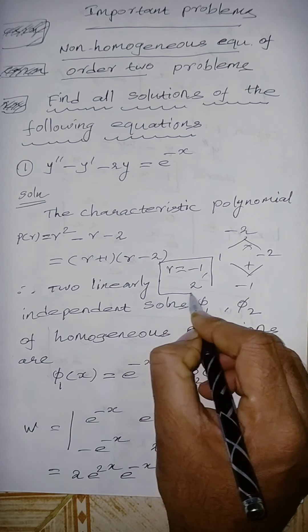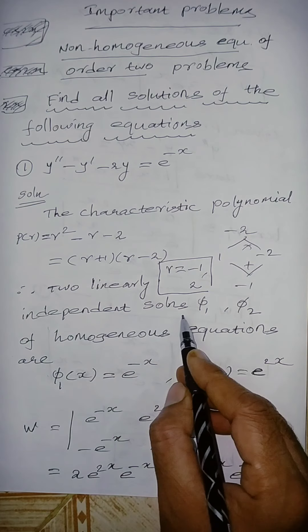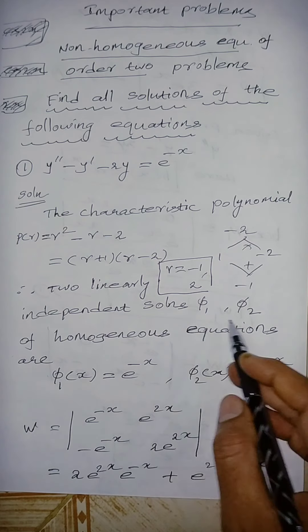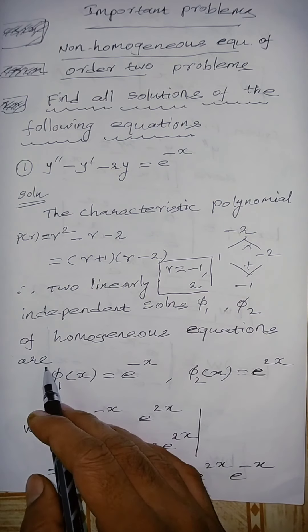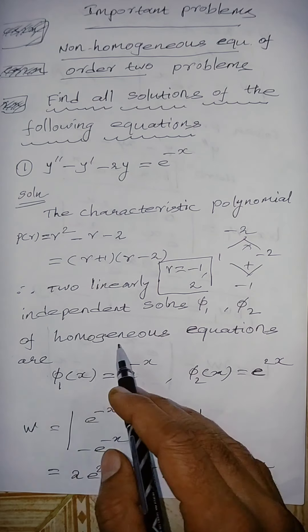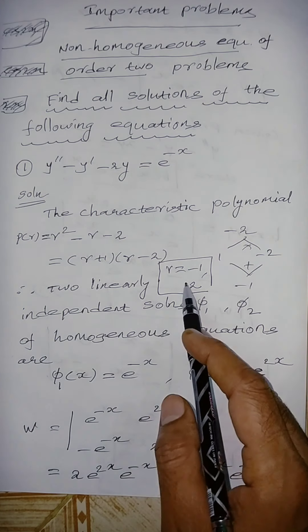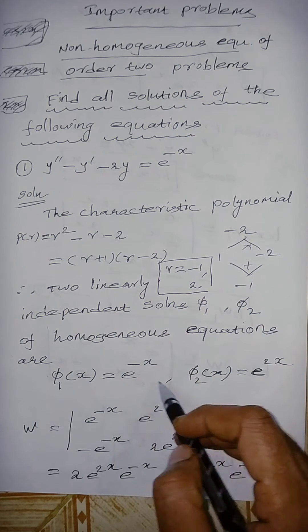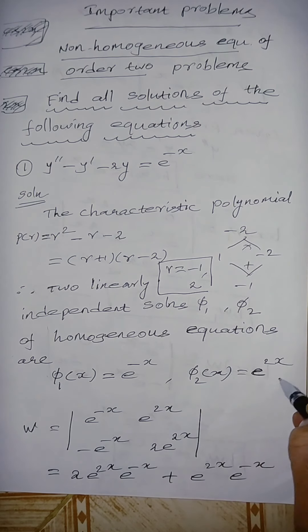Since we have two different roots, we get two linearly independent solutions of the homogeneous equation: ψ₁(x) = e^(−x) and ψ₂(x) = e^(2x).